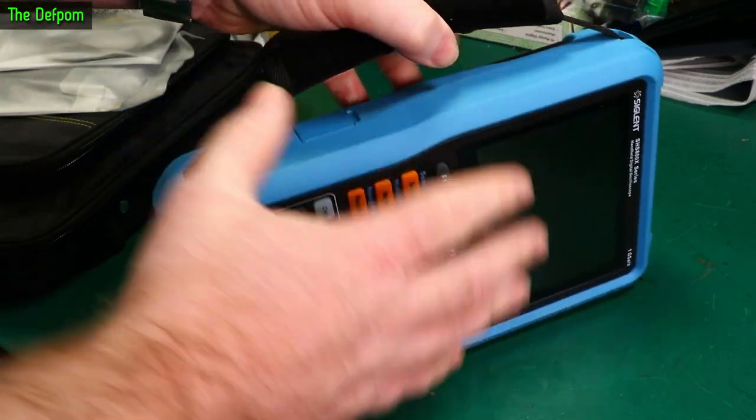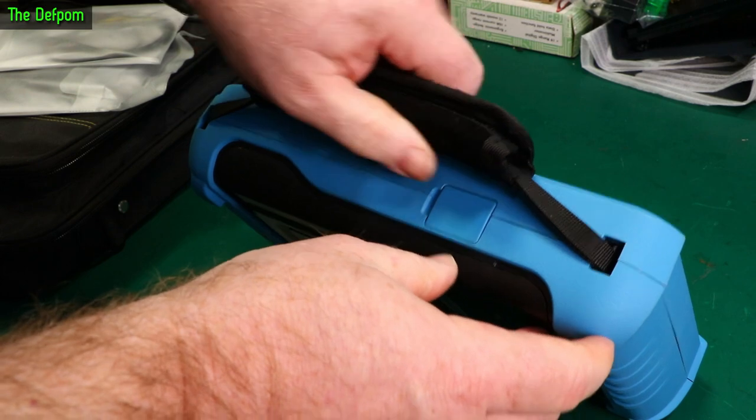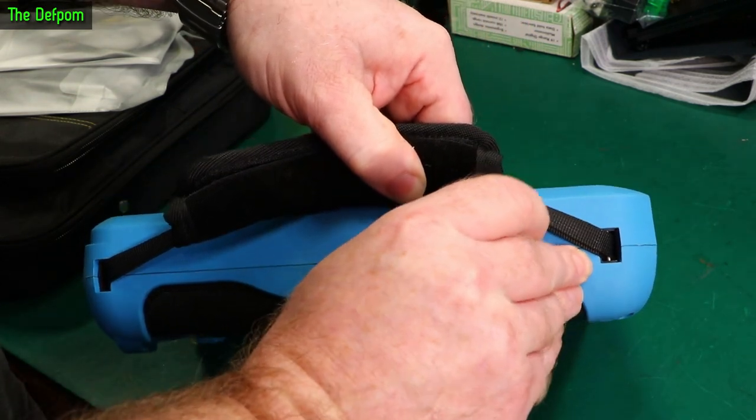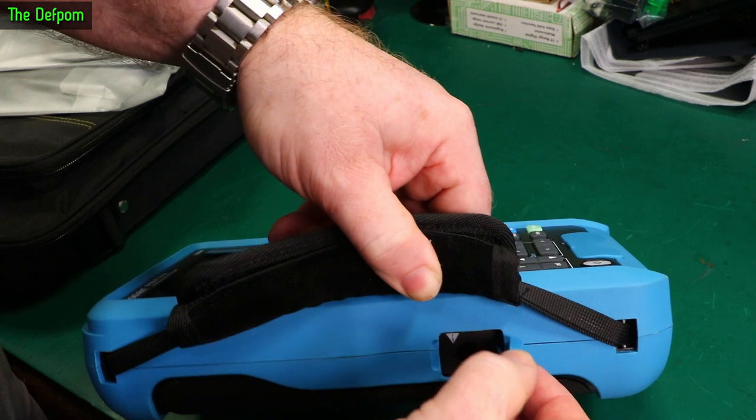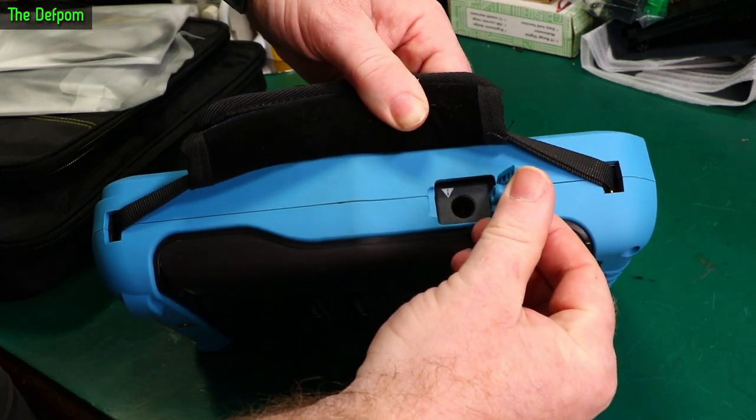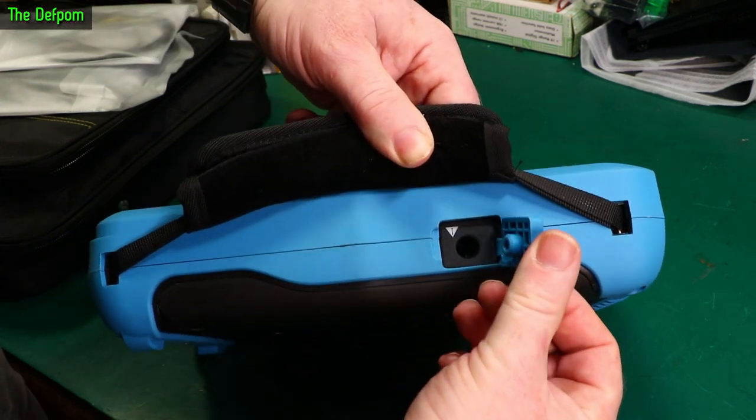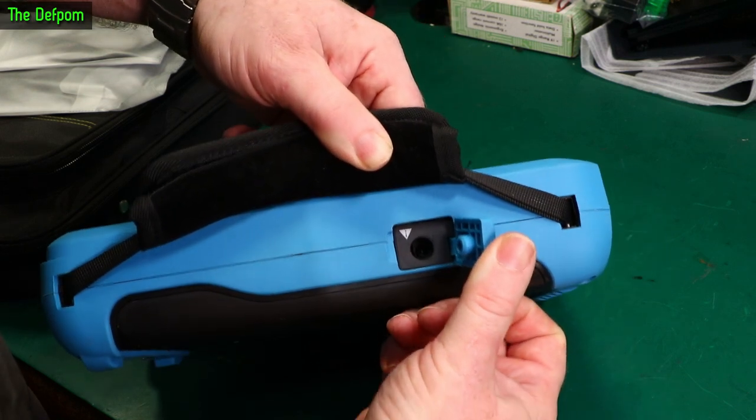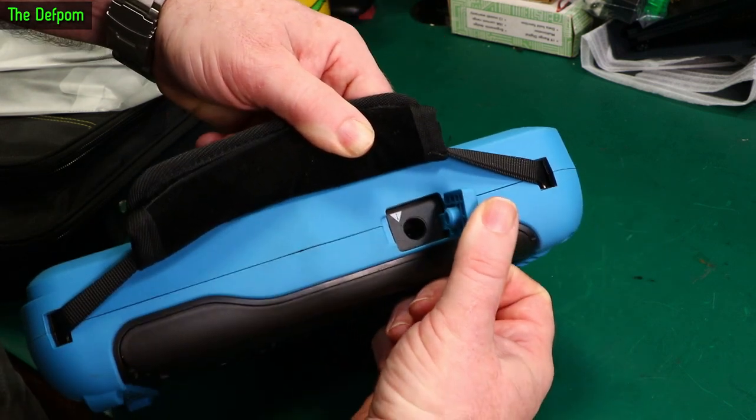This side we've got obviously the handle here and another little compartment. What's behind this one? This one pulls out further. Oh that's the DC jack. So that's for charging it. That is really recessed in there. Look at that. That's really deep in there.